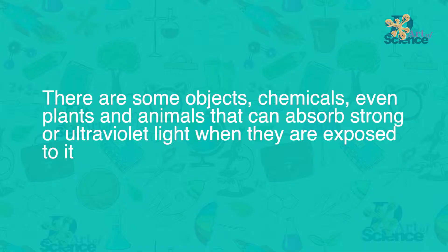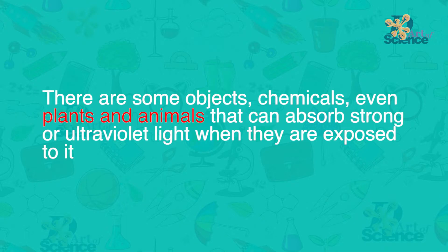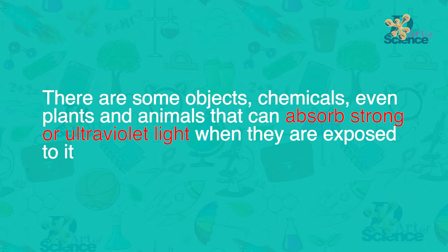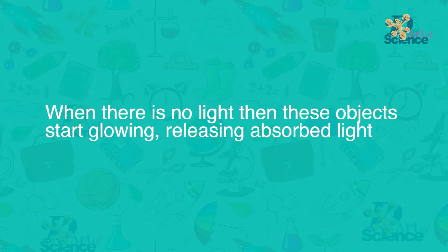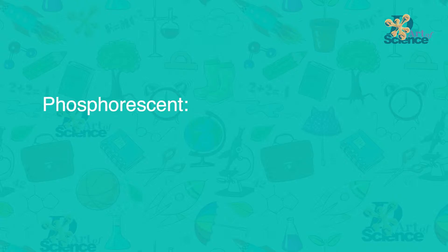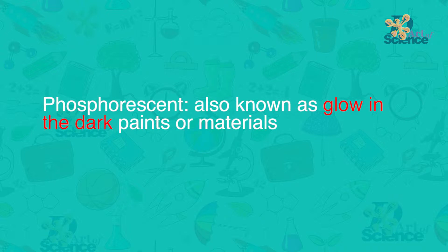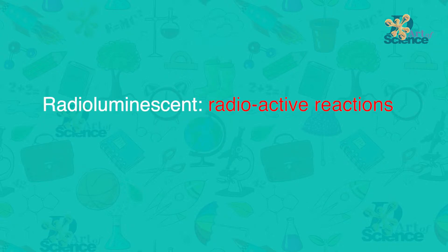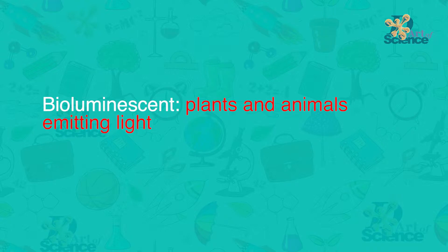I spoke about most of the things on the table, but what were the glowing things and where do they fit? This is not part of the syllabus, but science is much more beyond the syllabus. Some objects, chemicals, even plants and animals can absorb strong or ultraviolet light when exposed to it, and when there is no light, these objects start glowing, releasing absorbed light. The friendship band is different — it has a chemical reaction that emits light. This self-luminous glow could be phosphorescent (glow in the dark), radioluminescent (caused by radioactive reactions), or bioluminescent, which many plants and animals have.